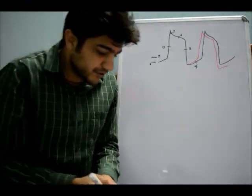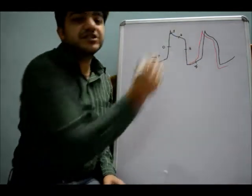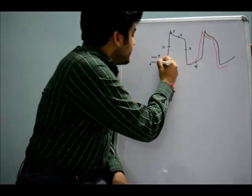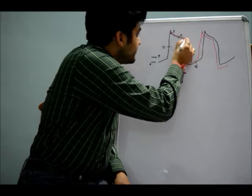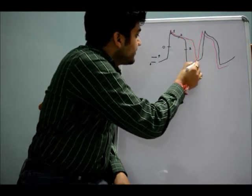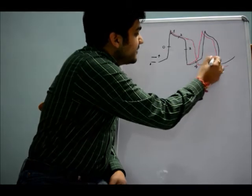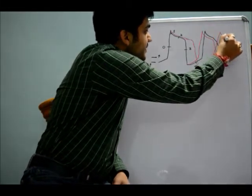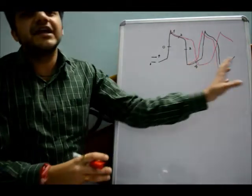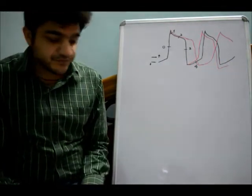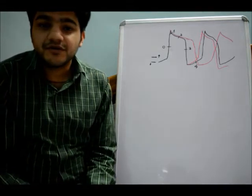Another approach: if you increase the action potential duration — if the action potential goes further and ends at a later stage — then it will start depolarization at a later stage and the next action potential will be generated later. So that will also lead to a delay in generation of the next action potential. By means of these mechanisms, we can stop or inhibit the enhanced automaticity of the cell.